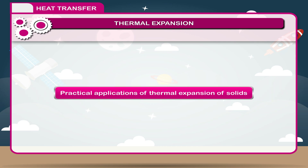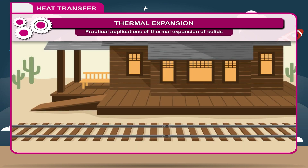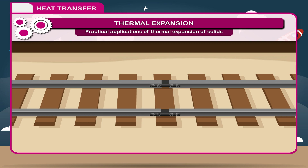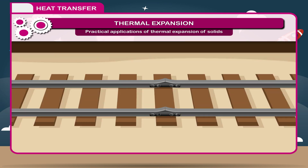Practical applications of thermal expansion of solids. While laying railway tracks, some space is left between the joints of railway lines. This is done because during excess heat, the temperature rises. If the rails are fixed tightly, leaving no space for expansion, they will bend in summer and may cause derailment of trains. Hence, to avoid this, some space is left between the joints of railway lines.